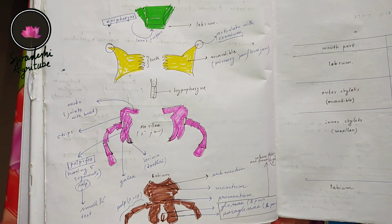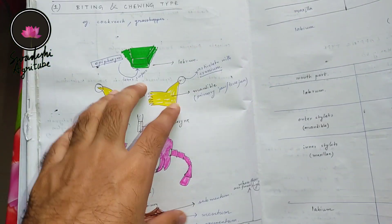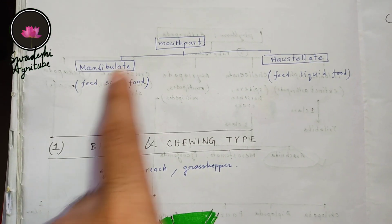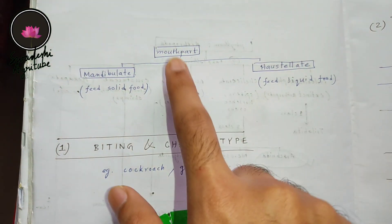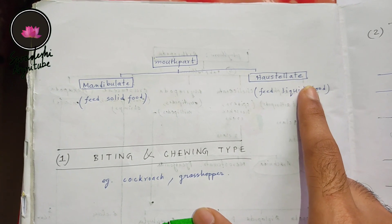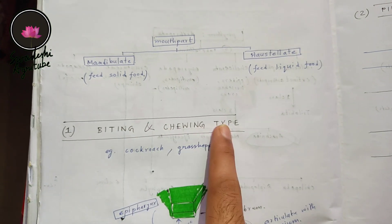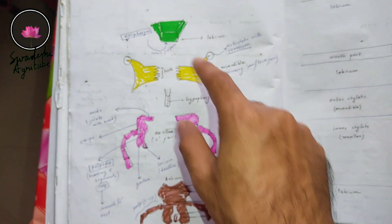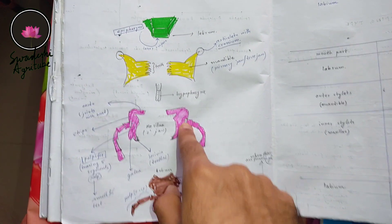Today I will discuss the biting and chewing type of mouthparts, and later in the videos I will cover all the modifications of the other mouthparts. Now, insects are classified into two sectors: Mandibulata and Haustellata. Mandibulata are those insects that feed on solid food, and Haustellata are those that feed on liquid food. The biting and chewing type is found in cockroaches and grasshoppers, and includes structures like labrum, labium, mandible, and maxilla.